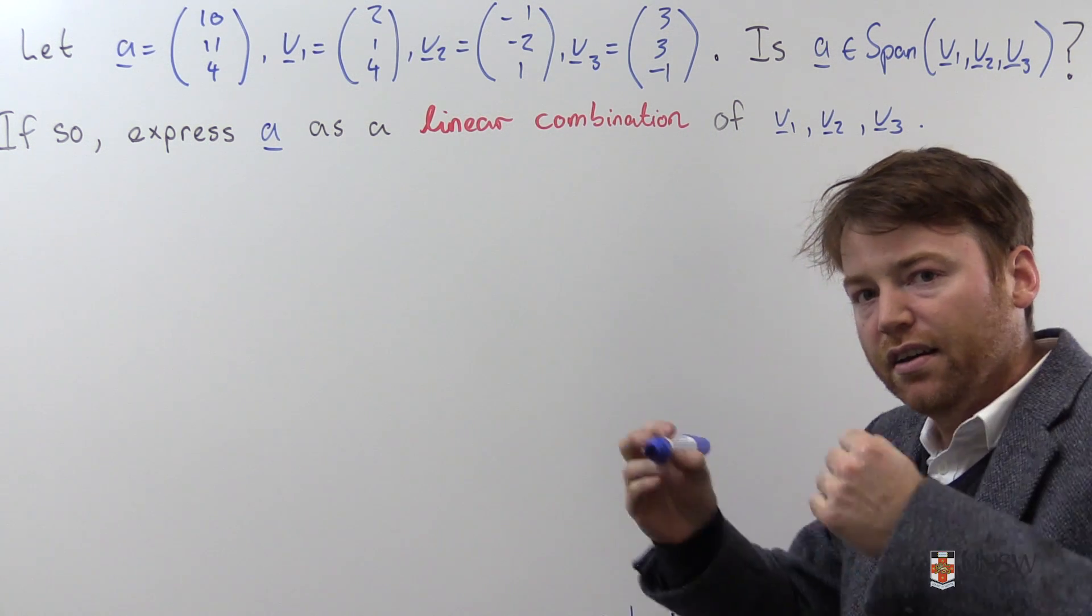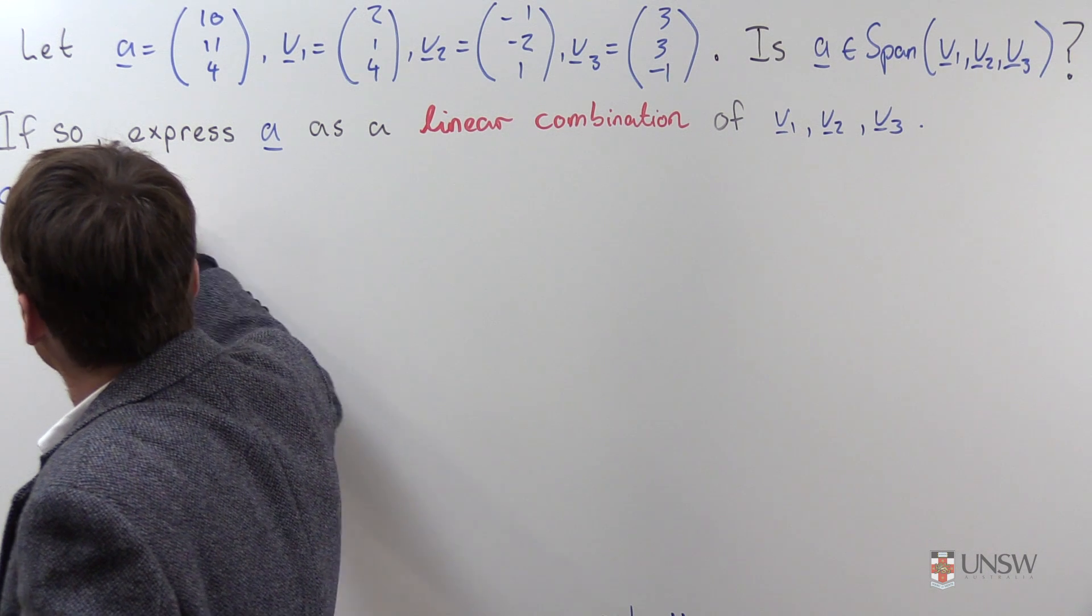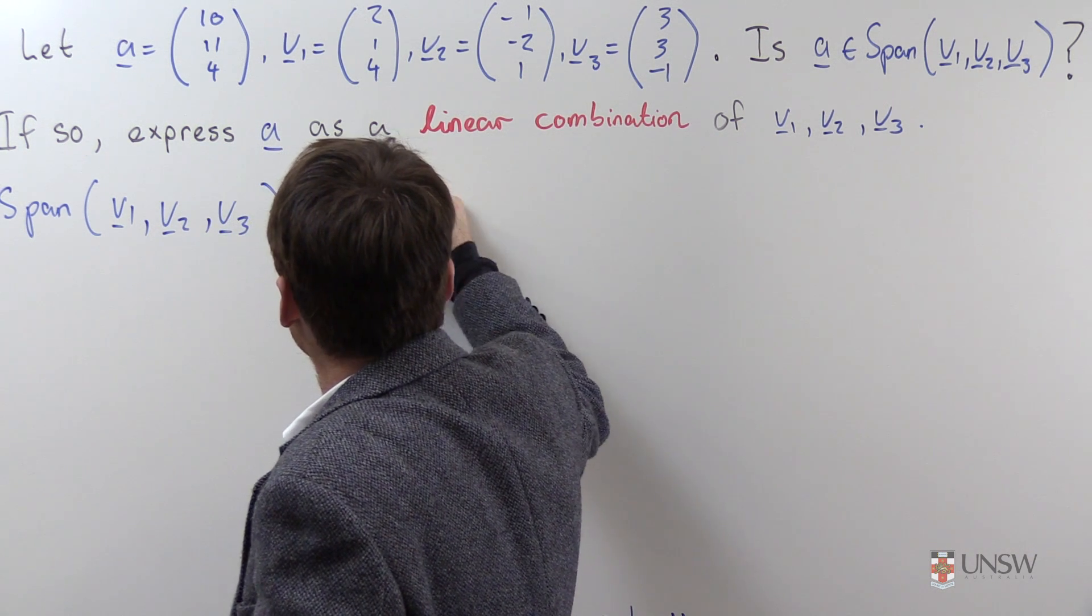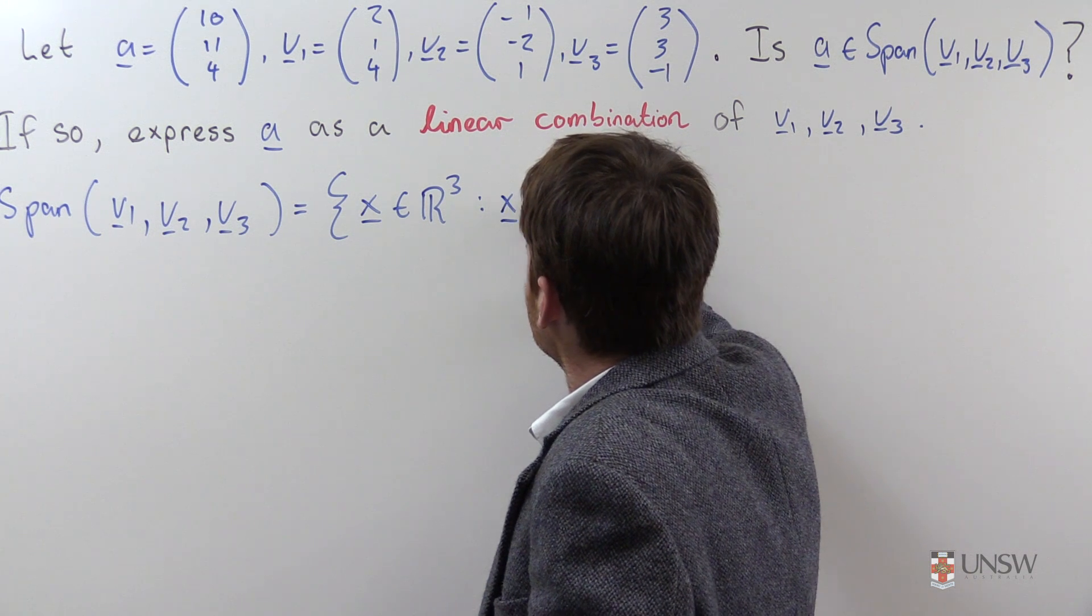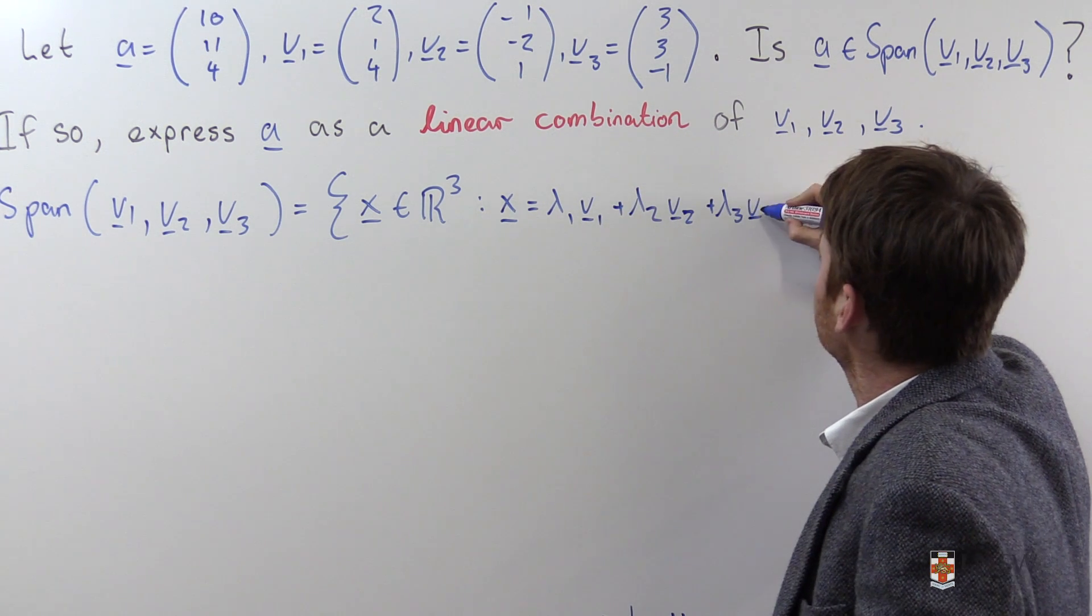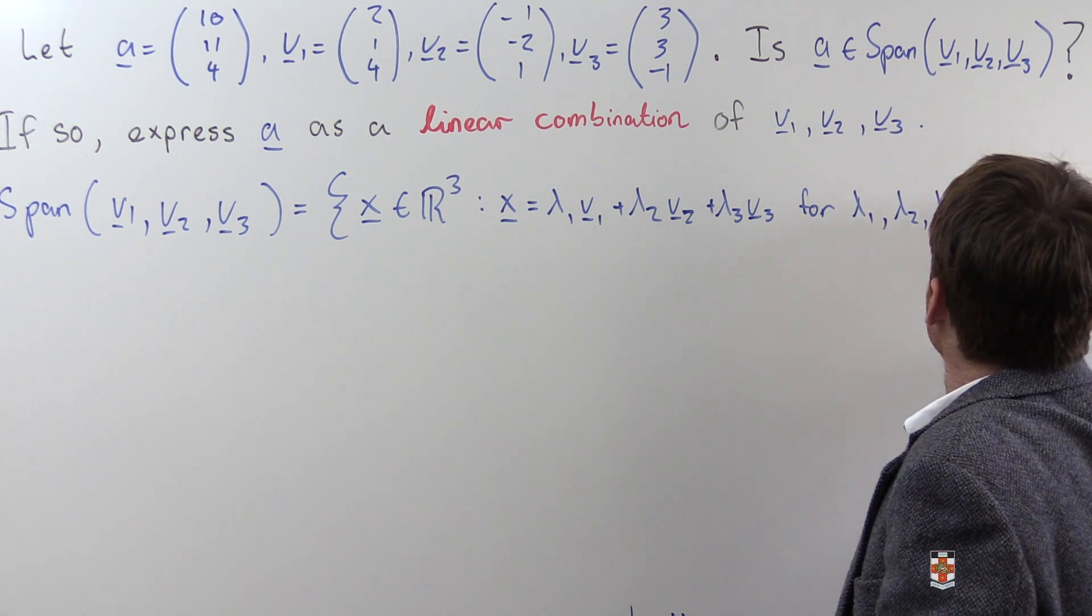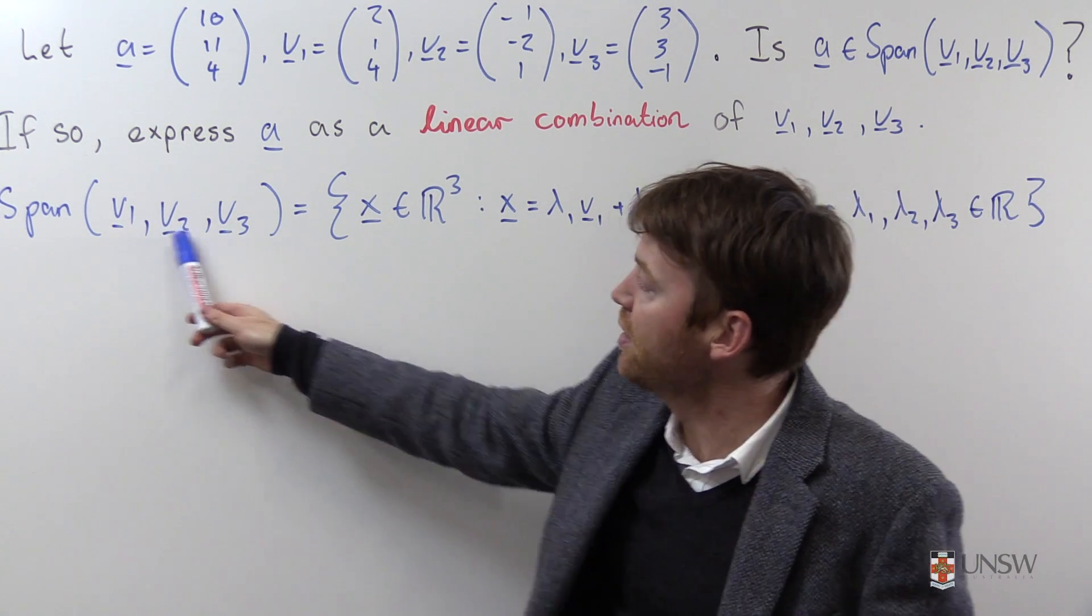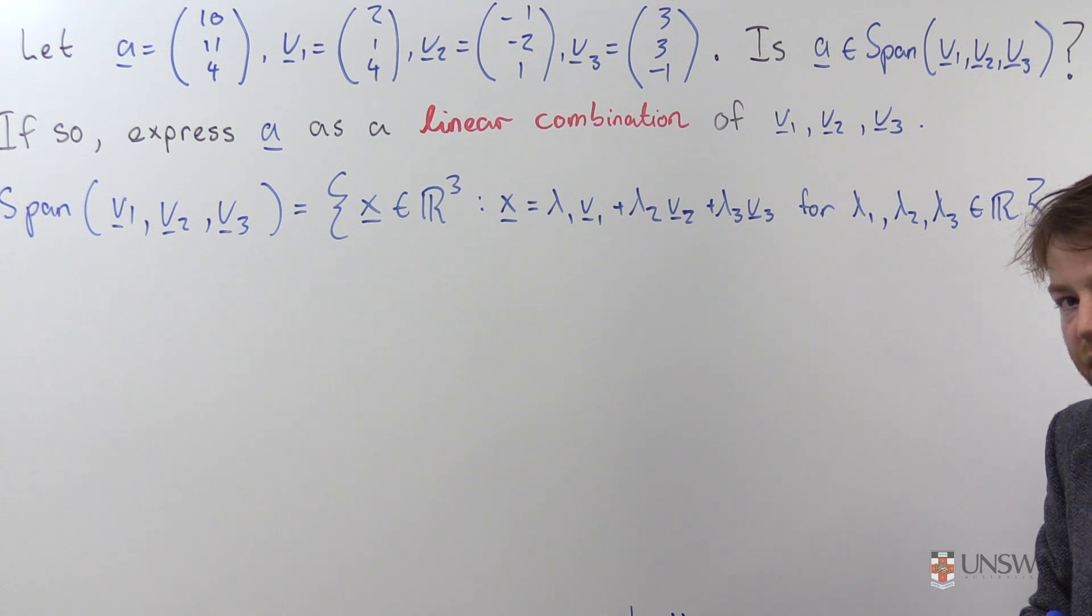First of all let's unpack this definition of span and have a good look at it. The span of v1, v2 and v3 is the set of all vectors x in this case from R³ because v1, v2 and v3 are from R³ such that x is equal to lambda 1 v1 plus lambda 2 v2 plus lambda 3 v3 for lambda 1 lambda 2 lambda 3 elements of R, just real numbers. That is to say the span of these three vectors is the set of all vectors which are linear combinations of the vectors v1, v2 and v3.